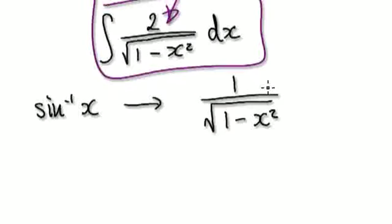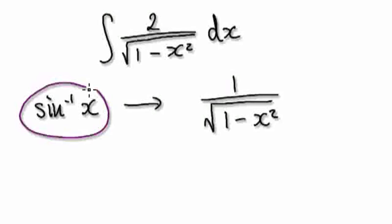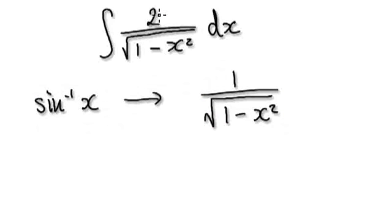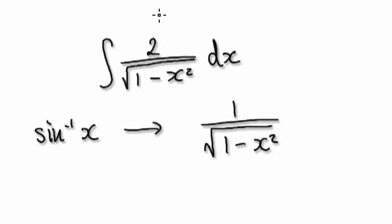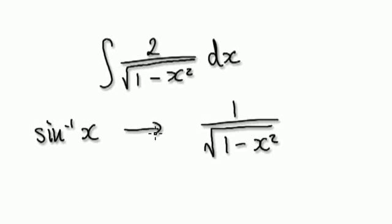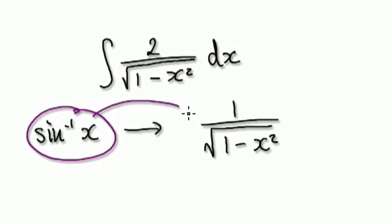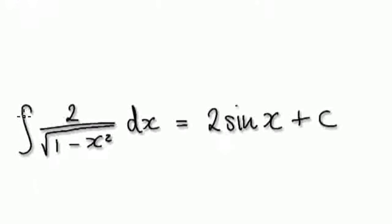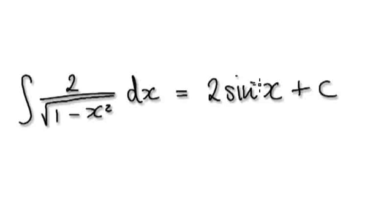Our first guess will be the inverse sine of x, since K is one. Differentiate it — it will give you this. You've got a two up here. When you make this your guess and differentiate it, it will give you this. Now make the adjustment: you want the two here, so adjust it. Your adjustment should be this here, and overall the answer would be this: two times the inverse sine of x, plus a constant.